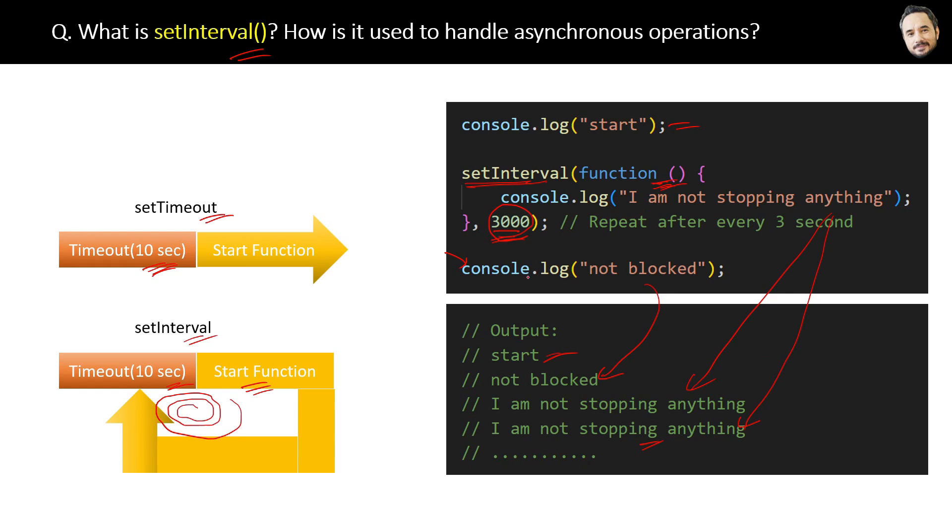Finally, the definition is: setInterval is a built-in JavaScript function that allows you to repeatedly execute a function at a specified interval asynchronously. Great, now you know it.